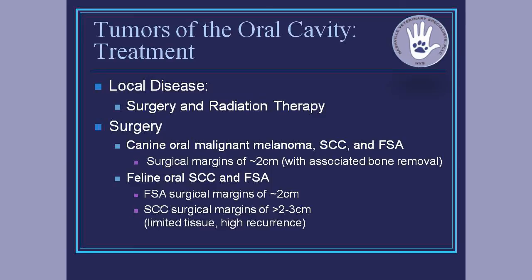When we start talking about feline tumors, fibrosarcomas need two centimeter margins; for squames it's actually defined as greater than two centimeters — two to three. But most of you have been inside a cat's mouth — you just don't have that anatomy unless you're doing a complete hemimandibulectomy or maxillectomy. It's very difficult to get anything near those margins, which is what makes some of these squames so challenging to treat.